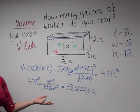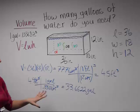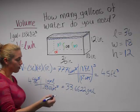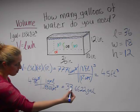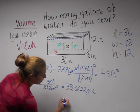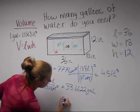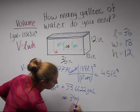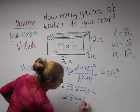But you can't really buy 0.6622 of a gallon, so you're going to need to round this up — you're going to need to buy 34 gallons of water.